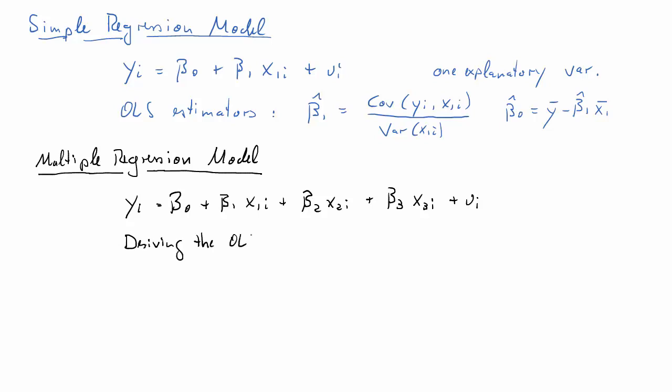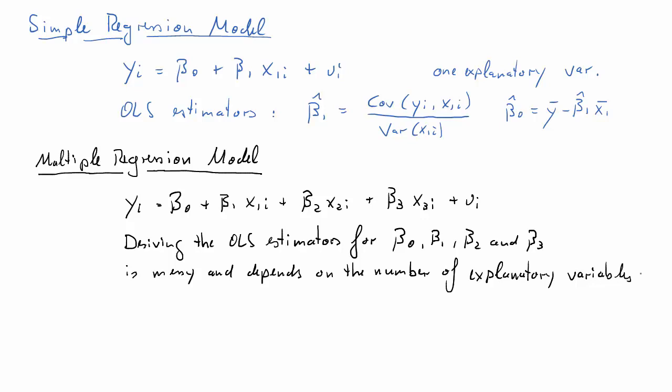So deriving the OLS estimators in this multiple regression model in the same manner as it was done for the simple regression model is actually pretty messy, and really not a joy and not very insightful. And mostly we don't want to do it because it really depends on the number of explanatory variables we are using. Here we are using 3, but what happens if we are using 4 or 5 or 10 and then these formulae change? That is really quite unsatisfying.